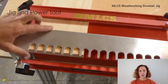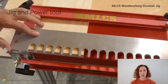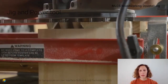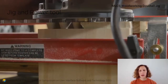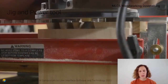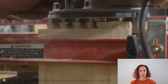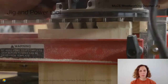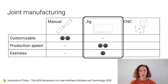Another way to manufacture joints is with a jig. A jig is a device that holds and guides a piece of wood while cutting with a power tool. This technique probably has the fastest production speed, but it's hard to customize the joint because you need a different jig for each geometry you want to make.